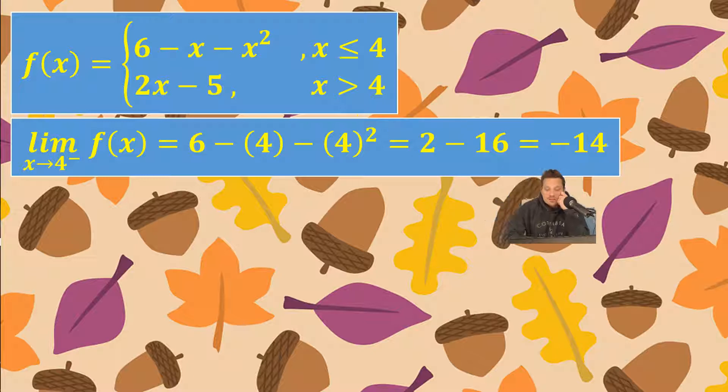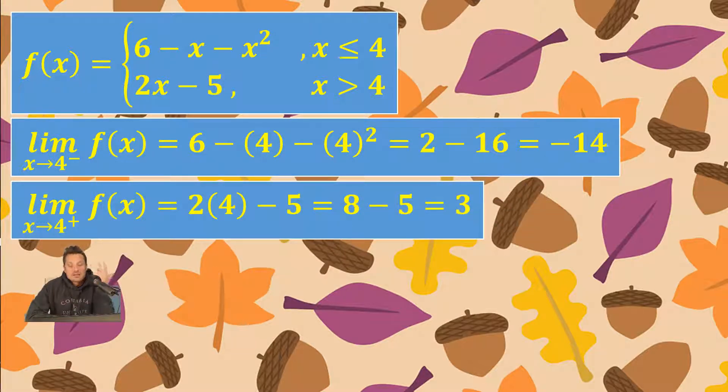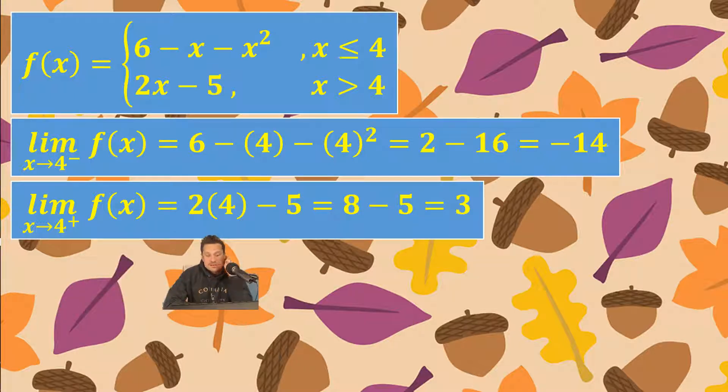Let's take a look at that. The limit of f of x as x approaches 4 from the right, in other words from values of x greater than 4. We just replace x and evaluate. So it's 2 times 4 minus 5 which is 8 minus 5 which is 3.